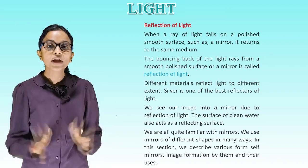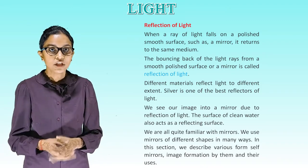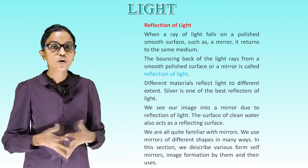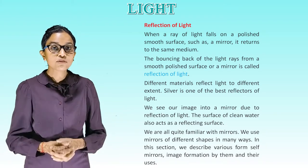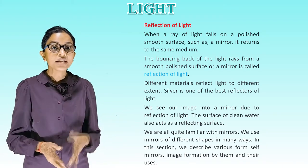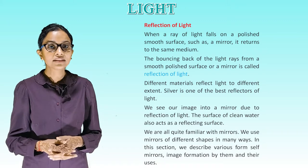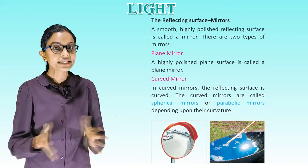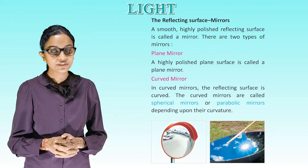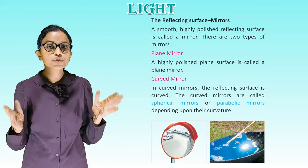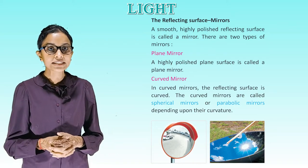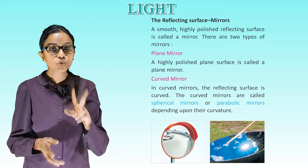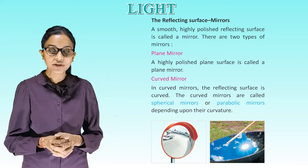We are quite familiar with mirrors. In this section we describe various forms of mirrors, image formation by them and their uses. The reflecting surface — mirrors: a smooth highly polished reflecting surface is called a mirror.